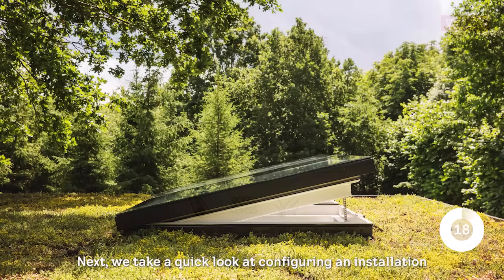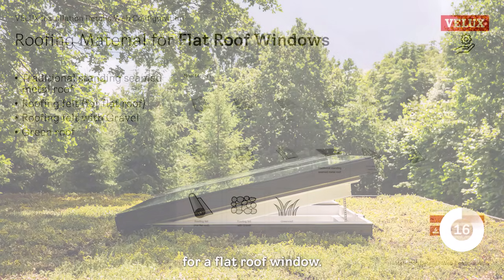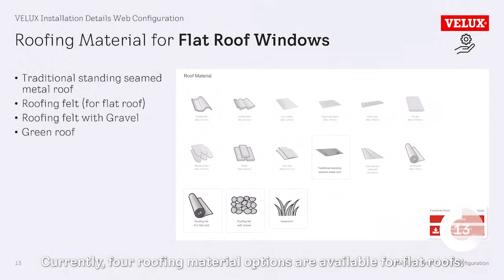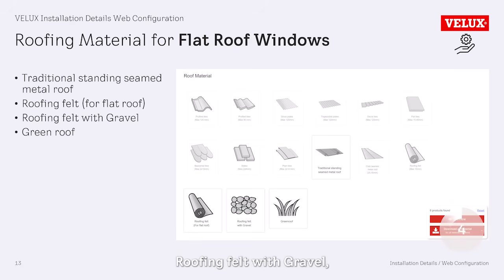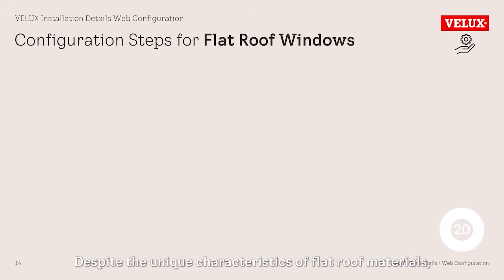Next, we take a quick look at configuring an installation for a flat roof window. Currently, four roofing material options are available for flat roofs: traditional standing seamed metal roof, roofing felt for flat roof, roofing felt with gravel, and green roof.